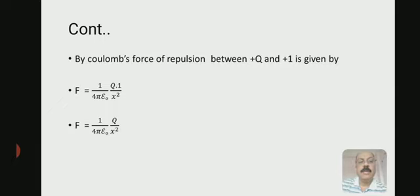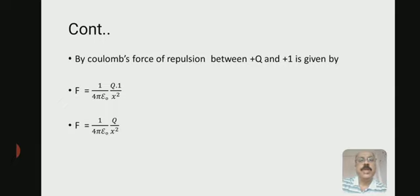By Coulomb's force, the repulsion between plus Q and plus one — that is, the unit charge — is given by Coulomb's law. The force between two charges is F = (1 / 4πε₀) × (q1·q2) / x². Here q1 is plus Q and q2 is plus one, therefore F = (1 / 4πε₀) × q / x².